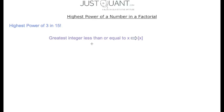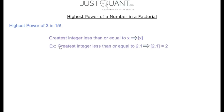Let's start with calculating the highest power of 3 in 15 factorial. In order to solve this, we use the greatest integer function: the greatest integer that is less than or equal to a given number x is represented by x enclosed within angle brackets. For example, the greatest integer less than or equal to 2.1 is 2, since 2 is the greatest integer less than or equal to 2.1.